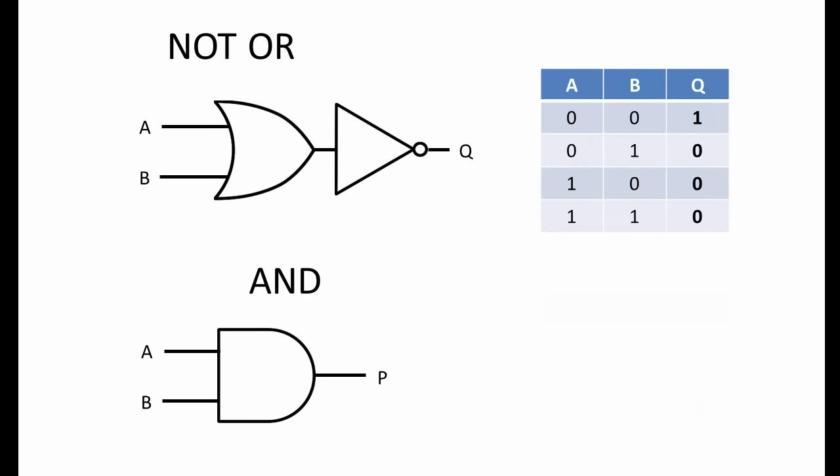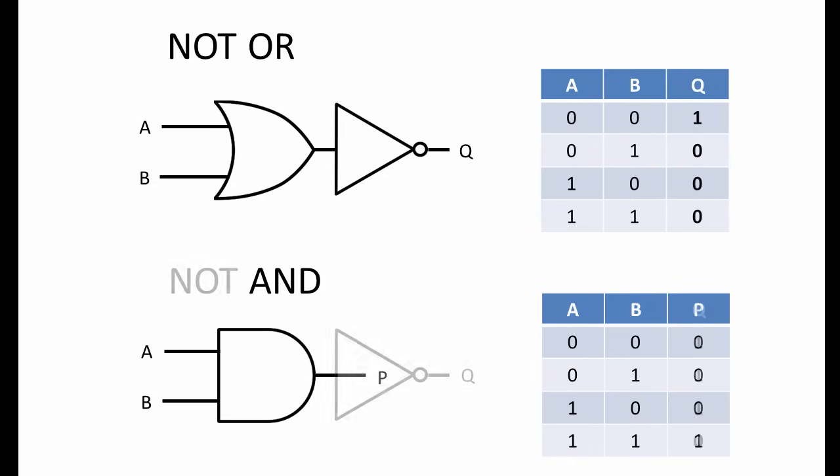In a similar fashion, we can invert the output of a regular AND gate. Then we can swap the 0s for 1s and the 1 for a 0 in the output column of this truth table.